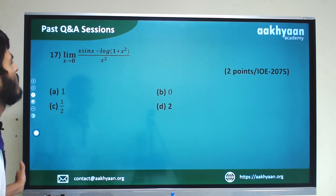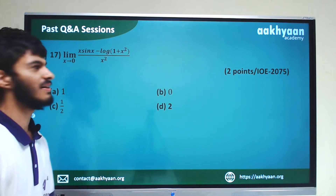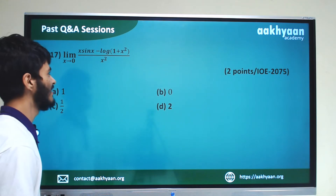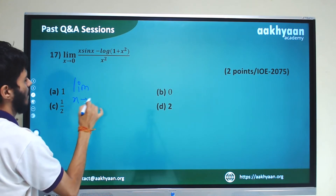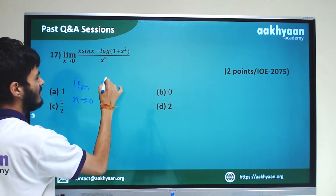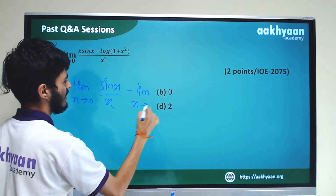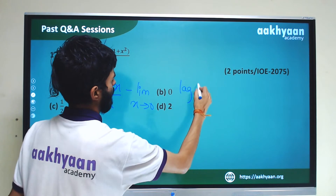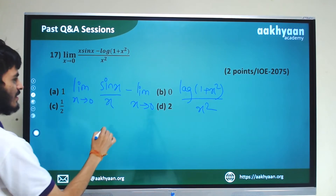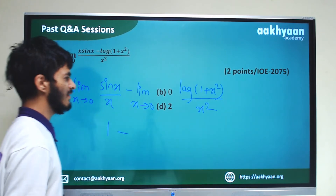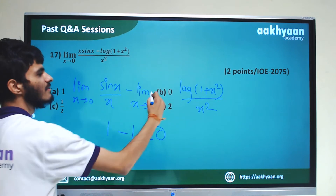In the 17th number problem, limit x tends to 0 of x sin x minus log(1 plus x squared) by x to the power 4. We use sin x by x tending to 1 and log(1 plus x squared) by x squared tending to 1 as x tends to 0. So the result simplifies and we get the correct answer.